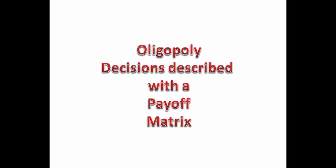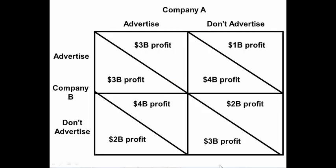Oligopoly decisions can be described with a payoff matrix. We're going to look at a payoff matrix for Company A and Company B because of the interdependence between them. The first thing to note is that Company A's profits are located in the upper right-hand corner and Company B's are located in the lower left-hand corner of each box in the matrix.